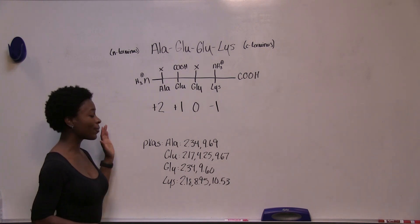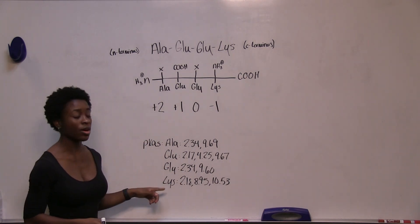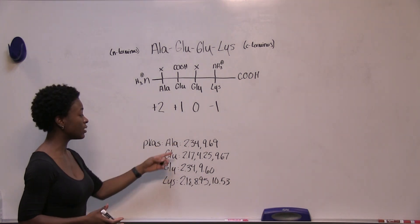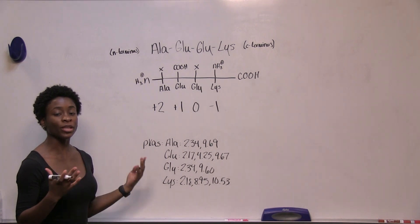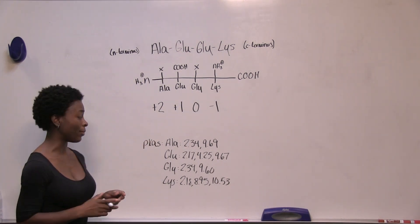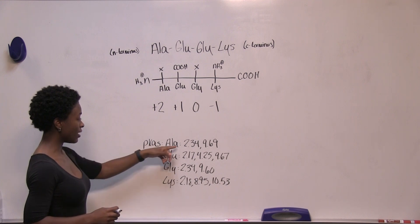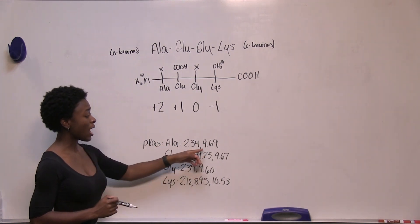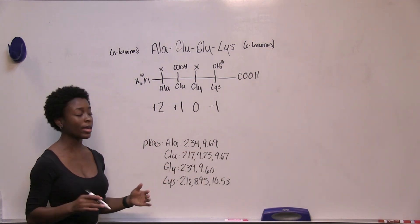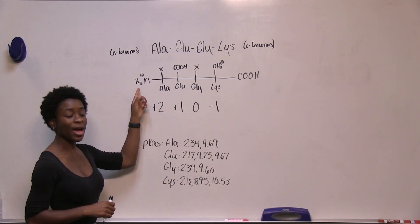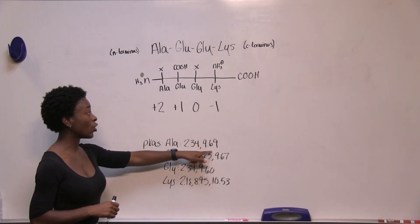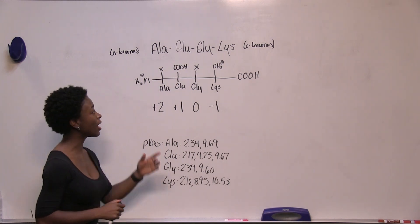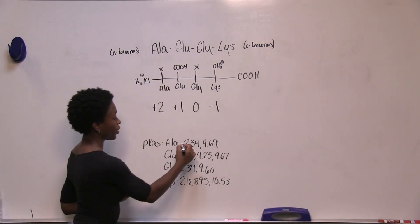I have all the pKa values associated with these amino acids. We need to eliminate pKa values associated with groups within peptide bonds. For alanine: 2.34 refers to the carboxyl group at the alpha carbon — it's now within a peptide bond so we cross it out. The 9.69 refers to the amino group at the N-terminus and it's free to ionize, so we leave it. For glutamate: 2.17 and 9.67 are now within peptide bonds, so we cross those out. The 4.25 refers to the ionizable group in its side chain — we leave that.